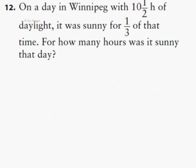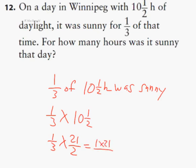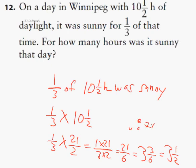Question 12: on a day in Winnipeg with 10 and a half hours of daylight, it was sunny for a third of that time. A third of 10 and a half is what we calculate — so 1 third multiplied by 10 and a half. Converting to improper: 1 third multiplied by 21 halves. Multiplying numerators and denominators gives 21 over 6, which is 3 and 3 sixths — that is, 3 and a half. Therefore, it was sunny for 3 and a half hours.